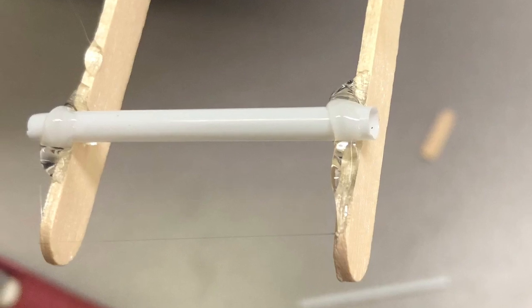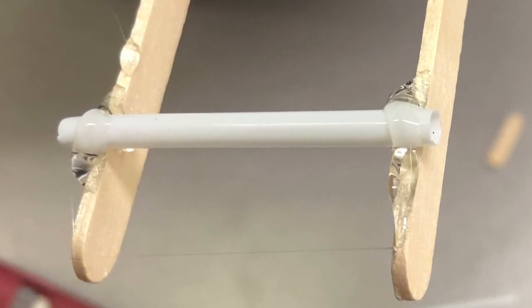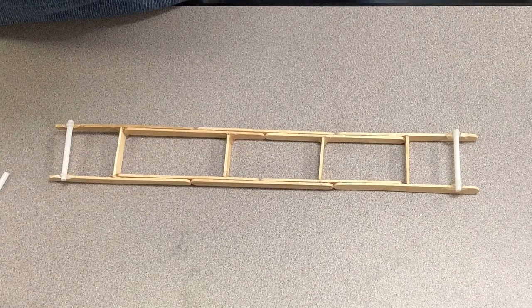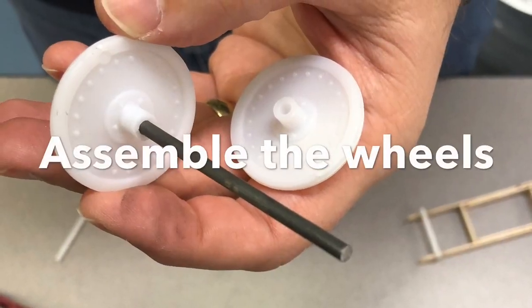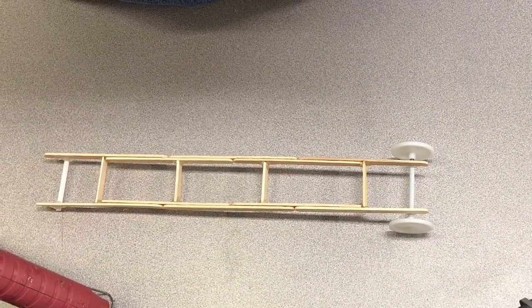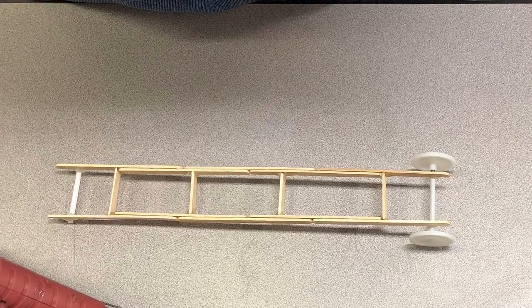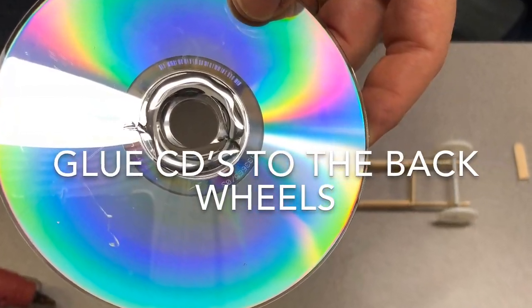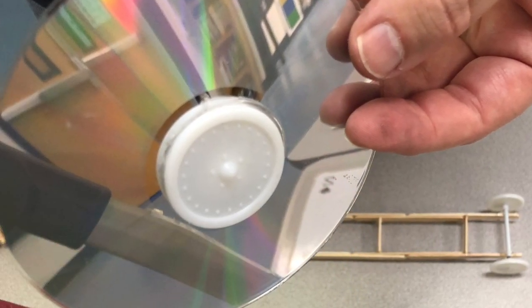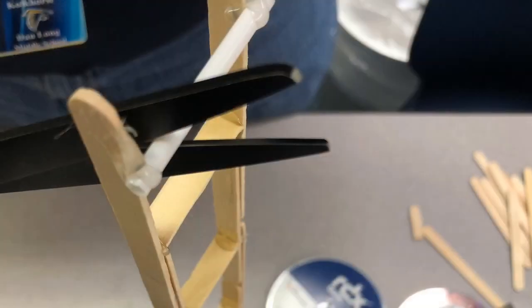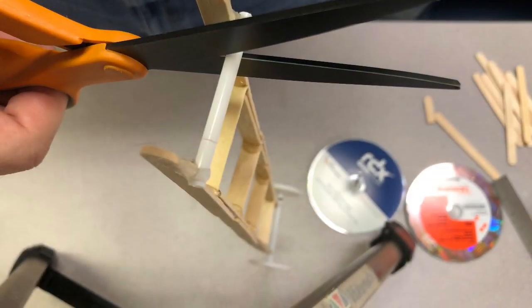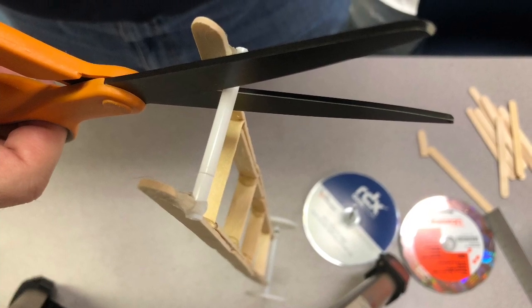Small wheels go in front, big wheels are for the back. You'll notice a little plastic wheel fits right in the middle of the CD, and centering it is very important. Trimming the back straw is also important because you have to be able to wrap the string around the back axle, and with the straw in the way that's not possible.